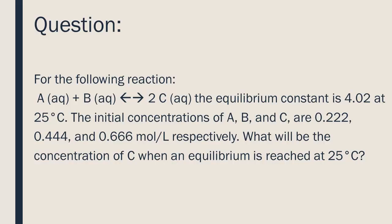The initial concentrations of A, B, and C are 0.222, 0.444, and 0.666 moles per liter, respectively. What will be the concentration of C when an equilibrium is reached at 25 degrees Celsius?